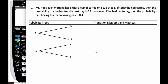So let's consider probability trees. There are two different events. If I had tea today, the probability of having tea tomorrow is 0.4, and since it's one or the other, the probability of having coffee is 0.6. Similarly, if I had coffee today, then the probability of tea is 0.2, which means coffee has to be 0.8. This is a probability tree diagram which you're comfortable with — you've seen it in the past.